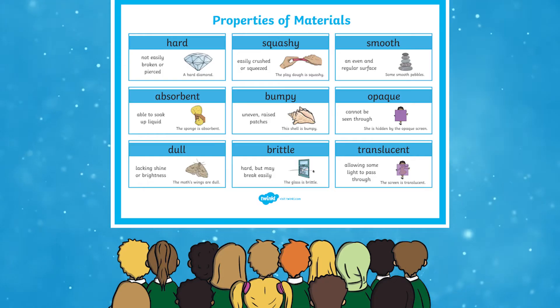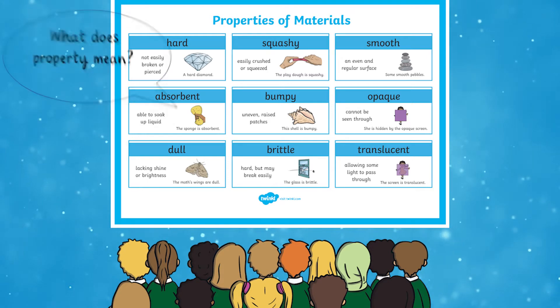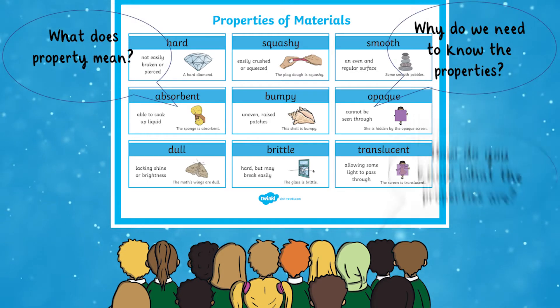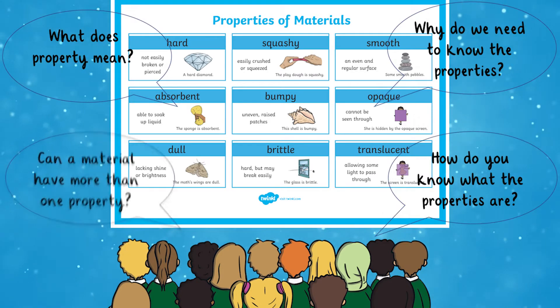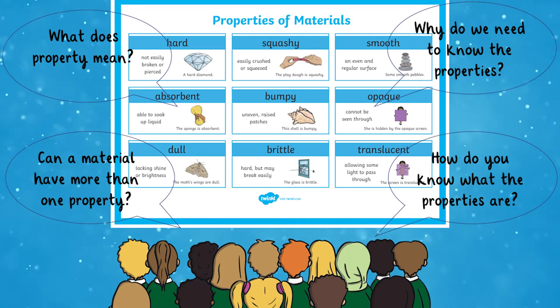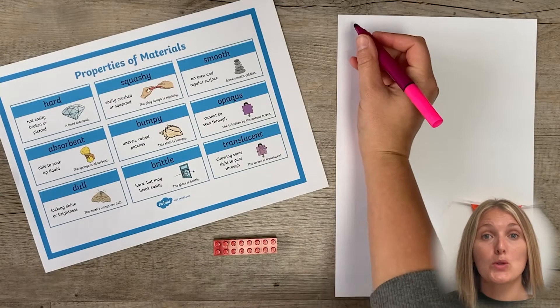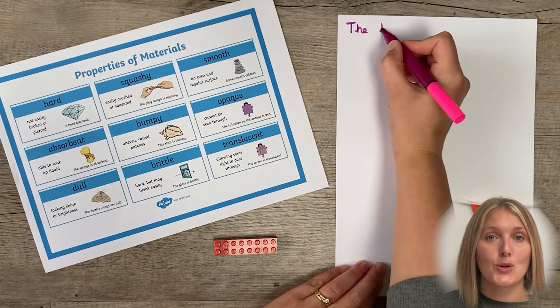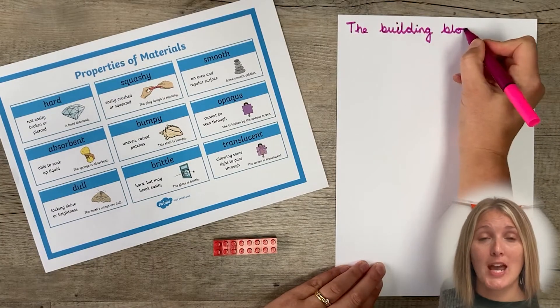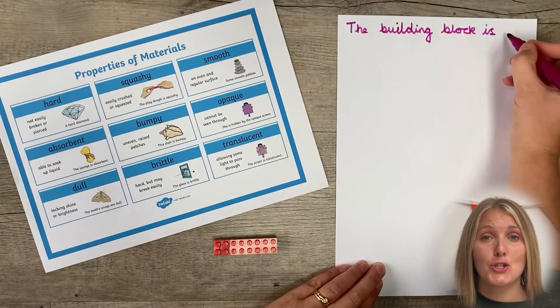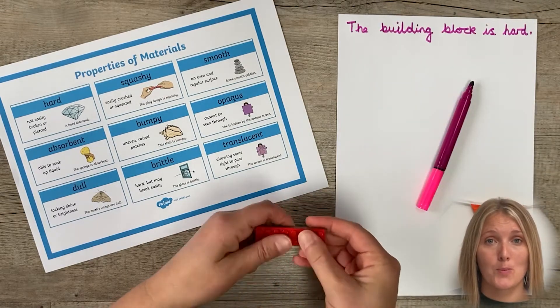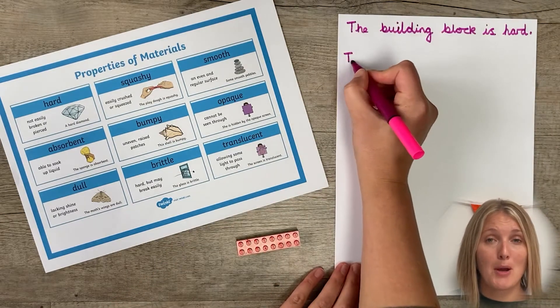There are lots of ways that these can be used during the science topic as well. Let's take a look. Just allowing children to have a look through the mat might stimulate some interesting scientific questions and discussions. Children would really enjoy the opportunity to be given an object and then to choose specific words to describe that object using the poster.